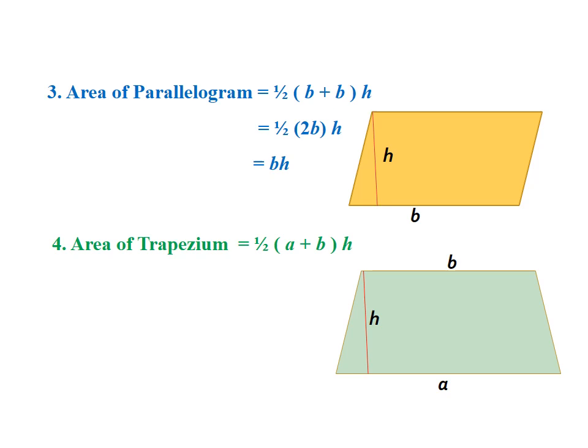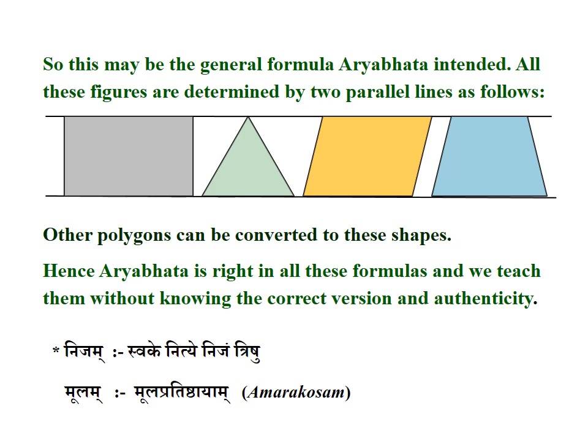So the area of a trapezium formula is the right general formula covering all these figures. All these figures are determined by two parallel lines; other polygons can be converted to these shapes. We teach them without knowing the correct version and authenticity. The word 'Nijam' appears in Amarakosha: 'Nijam svake nitye nijam trishu.' Also, 'Moolam' means 'moola pradishtayam' — also from Amarakosha.